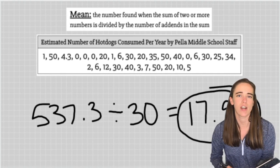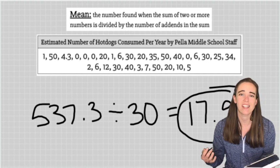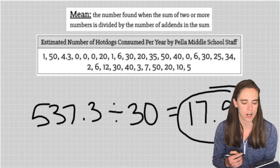It is important when you're finding the mean to include zero. You'll see I have several places where people said that they ate zero hot dogs in a year. I do need to include those to find the actual mean.